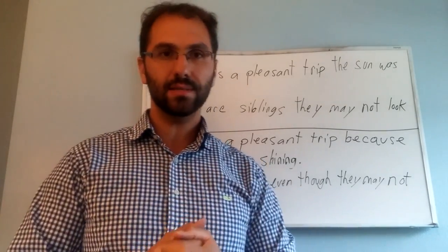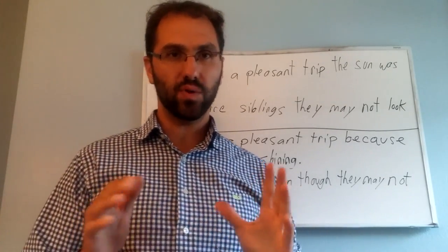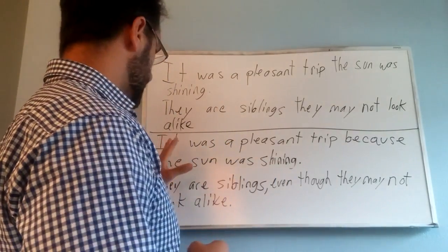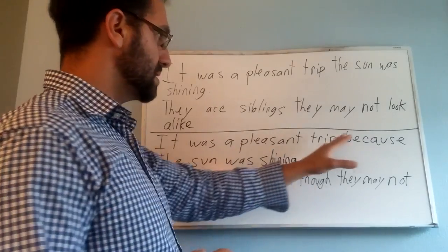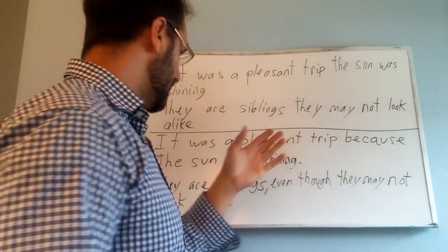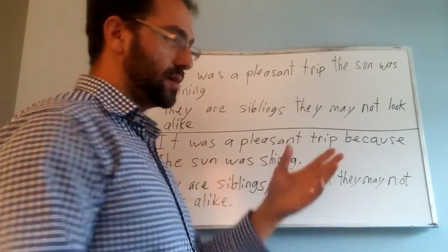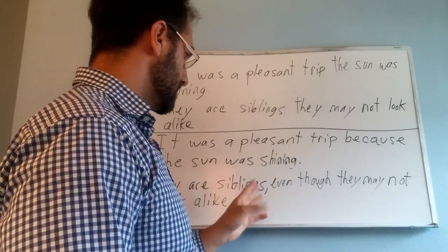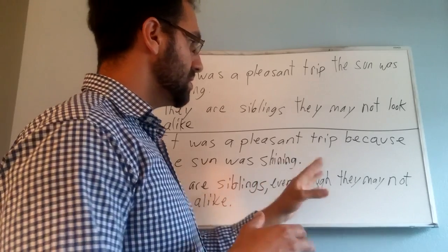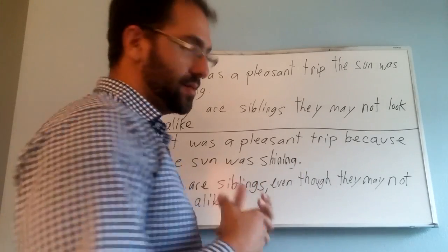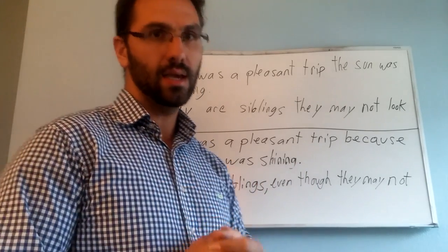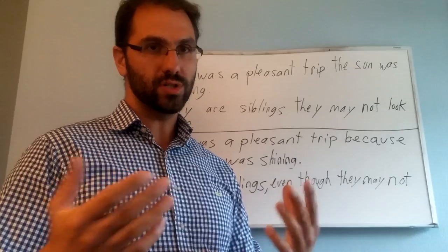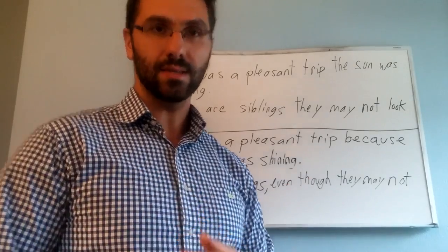Now, to rearrange the sentences in the proper form, we would make it like this. It was a pleasant trip because the sun was shining. And then next, their siblings, even though they may not look alike. And that's the proper way to adjust those sentences.